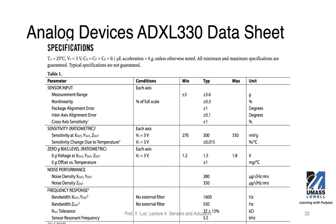We can use this as an example. This is an accelerometer from Analog Devices — this is just a capture of the datasheet. You can see the parameters listed here, including the measurement range of these sensors. This is a three-axis accelerometer sensor, and the measurement range is typically plus or minus 3.6 G, because you have opposite directions.